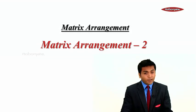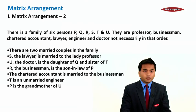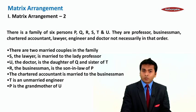Hello everyone, let's look at matrix arrangement part 2. There is a family of six persons P, Q, R, S, T and U. They are professor, businessman, chartered accountant, lawyer, engineer and doctor not necessarily in that order.